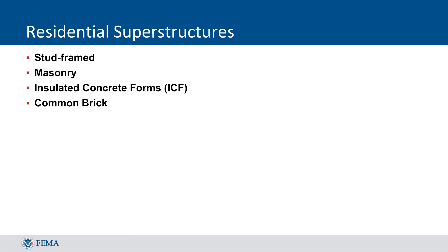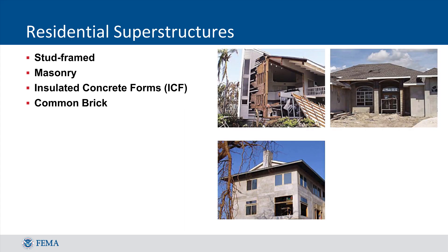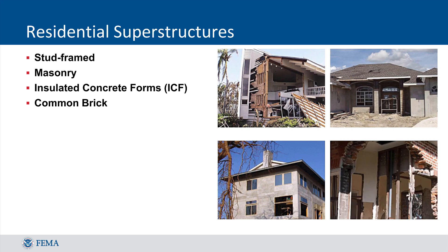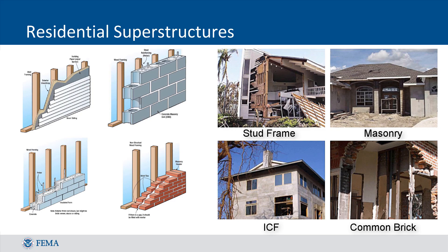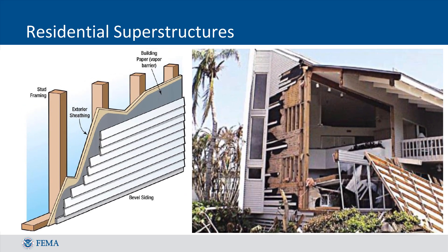The next structure attribute we'll cover is superstructure. In layman's terms, the superstructure refers to the bones of the structure and is the primary part of what is keeping the structure standing. The superstructure does not refer simply to the exterior finish on the outside of the house, which may be made of a different type of material than the superstructure. In SDE, there are four types of superstructure: stud framed, masonry, insulated concrete forms, and common brick. A stud framed structure uses wooden studs as the primary support system and exterior siding is generally applied as the covering on the outside.